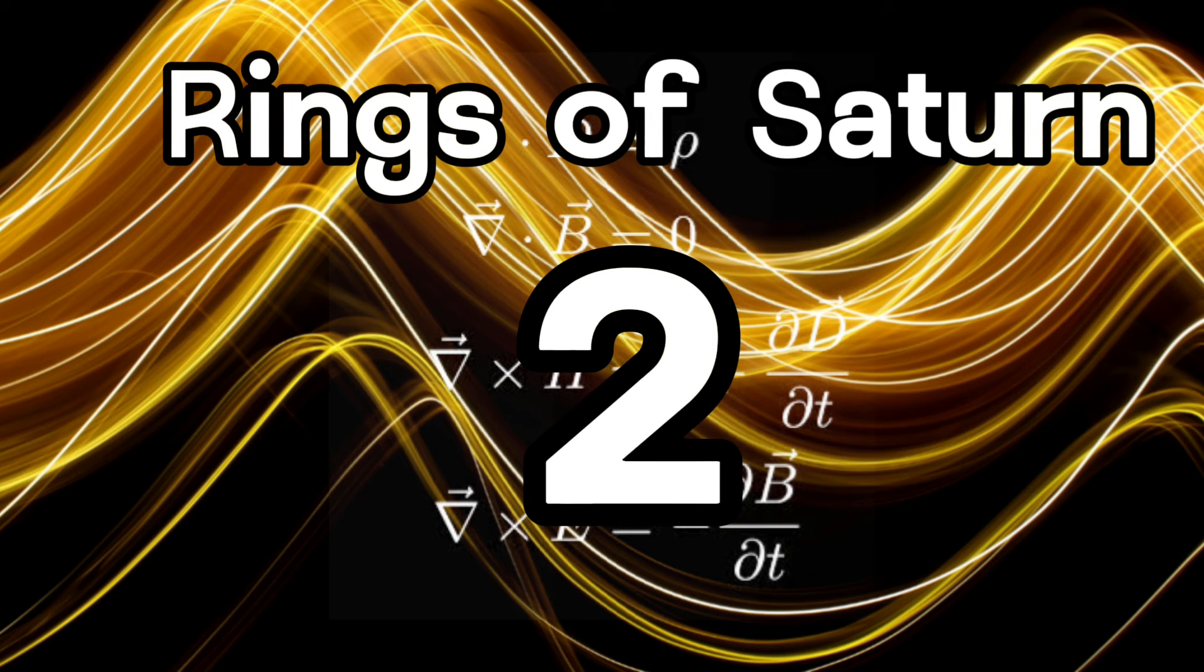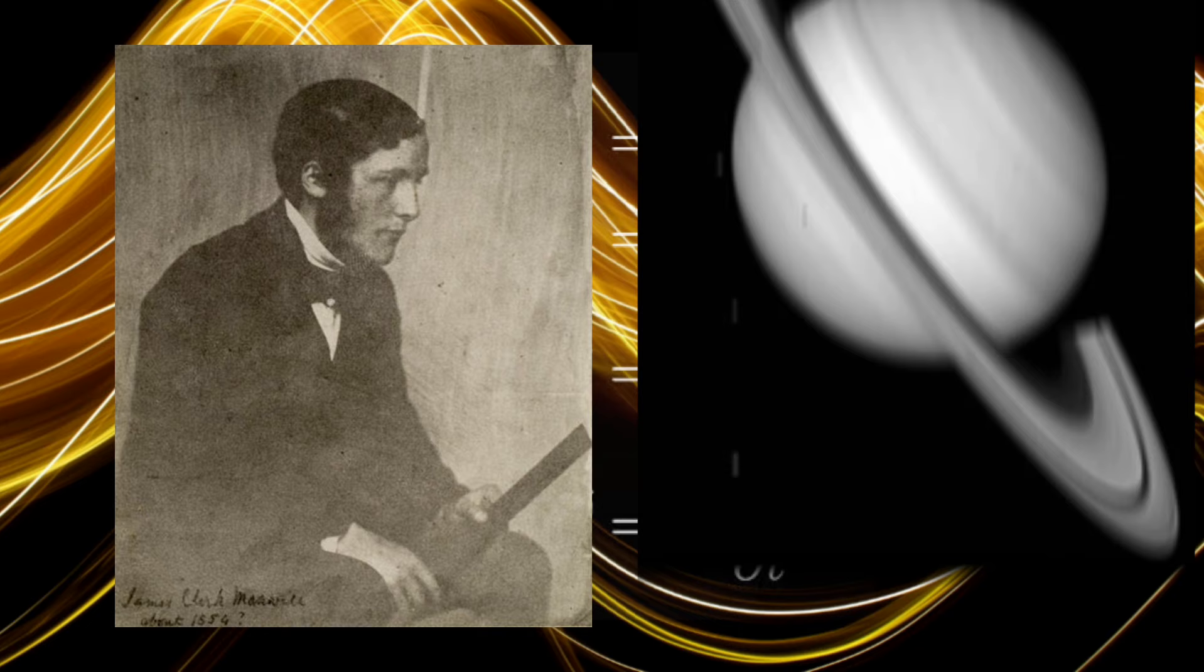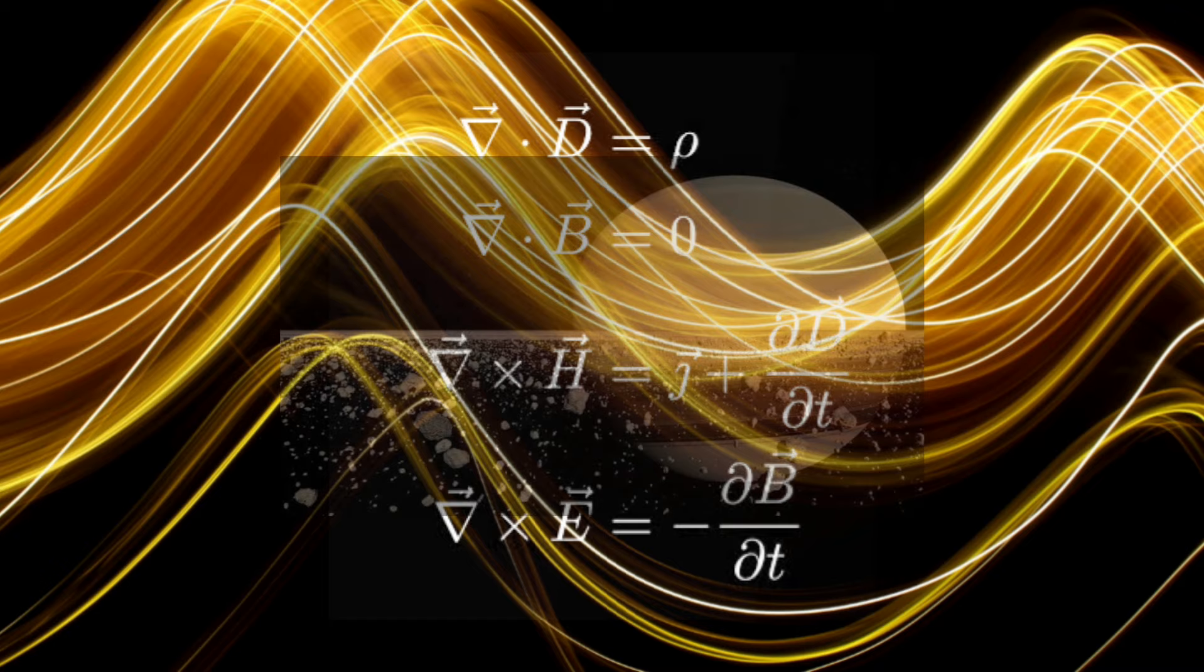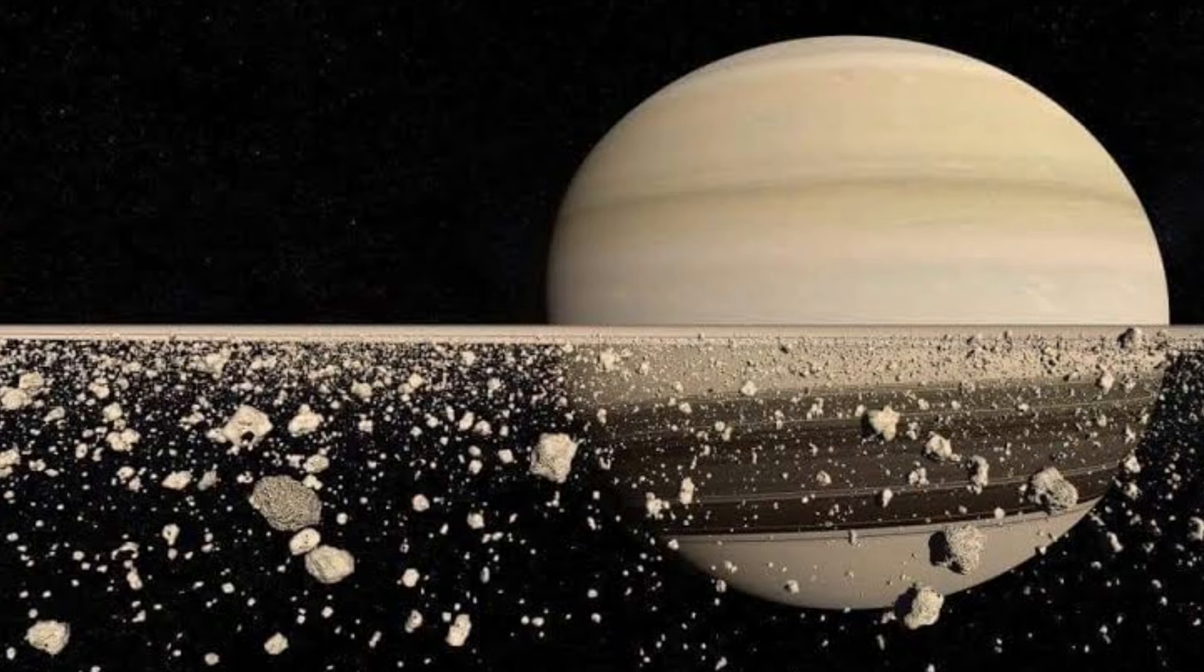2. Rings of Saturn. Maxwell made significant contributions to the understanding of the rings of Saturn. In 1859 he won the esteemed Adams Prize of Cambridge University by publishing a paper titled 'On the Stability of the Motion of Saturn's Rings,' where he used mathematical analysis to demonstrate that the rings could not be solid structures. Instead, he proposed that the rings consisted of numerous small particles, each in its own orbit around Saturn. This insight revolutionized the study of planetary rings and laid the foundation for future discoveries about their composition and behavior.